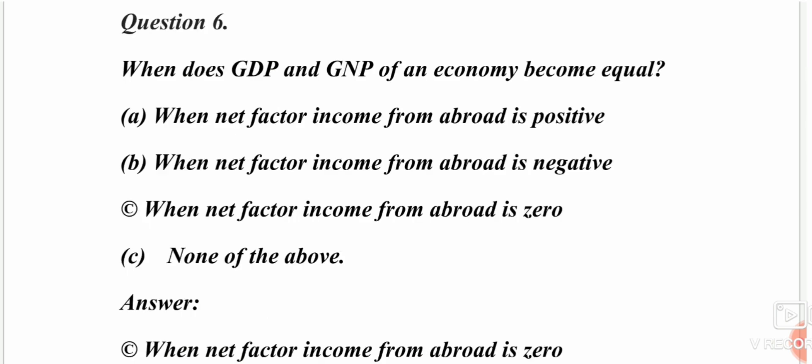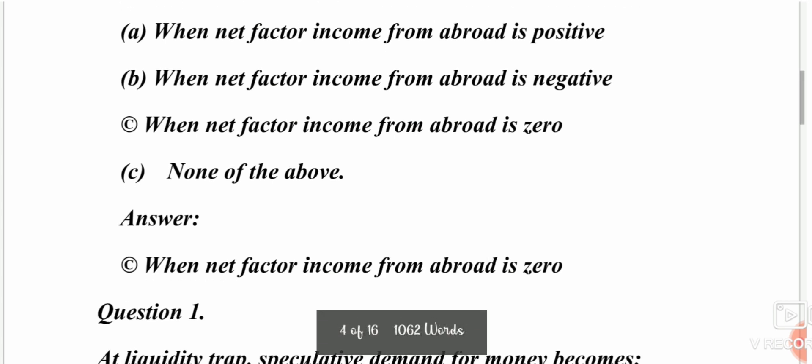When does GDP and GNP of an economy become equal? GDP equals GNP when net factor income from abroad is zero. The answer is net factor income from abroad equals zero — that is when GNP equals GDP.